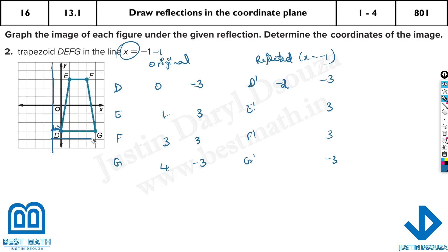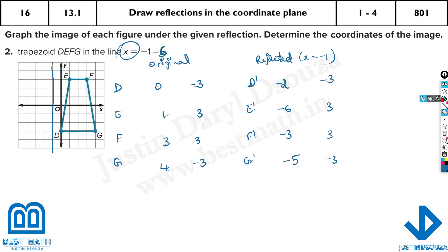Now for the other points: the distance from the line of reflection to E is 2, and the line of reflection is minus 1, so E prime x = minus 1 minus 2 = minus 3. For F: the distance is 1, 2, 3, 4, 5 — so minus 1 minus 5 = minus 6. For G: the distance is 4, so minus 1 minus 4 = minus 5. These are the correct reflected x values.